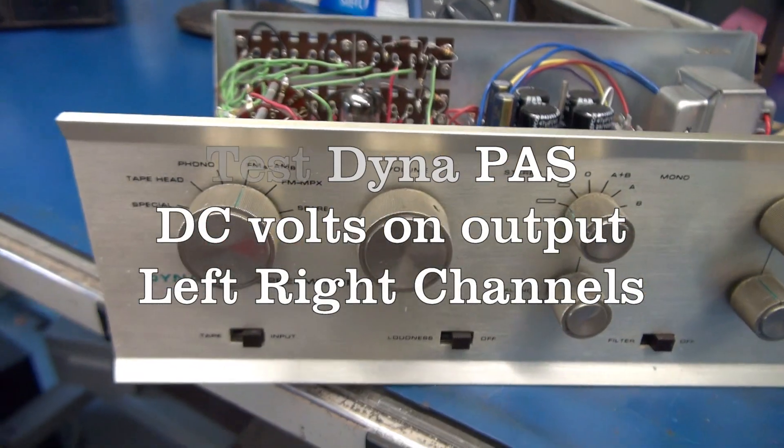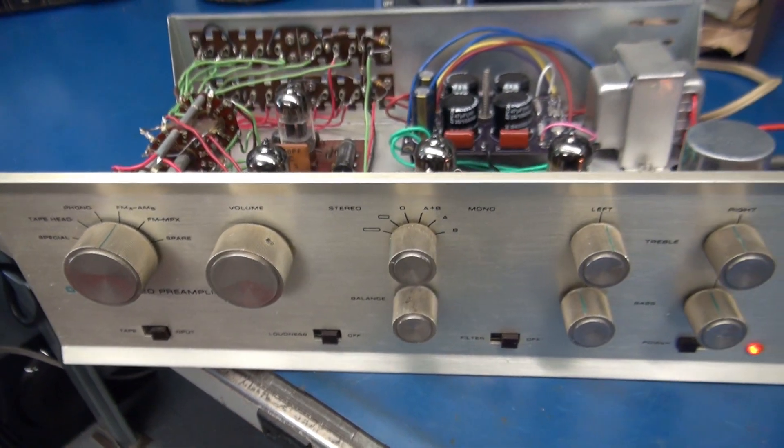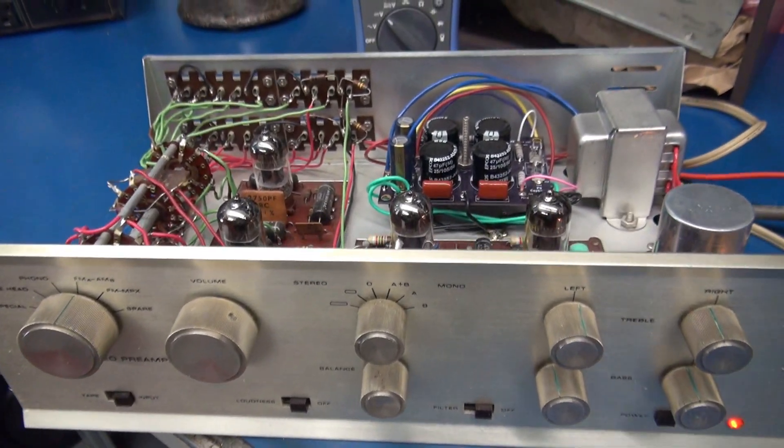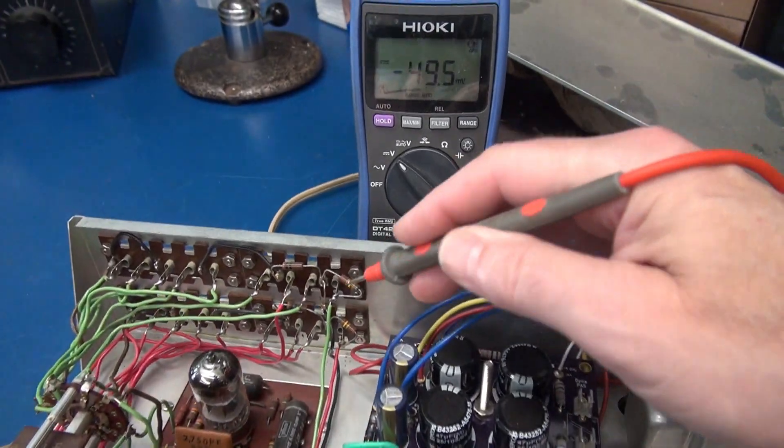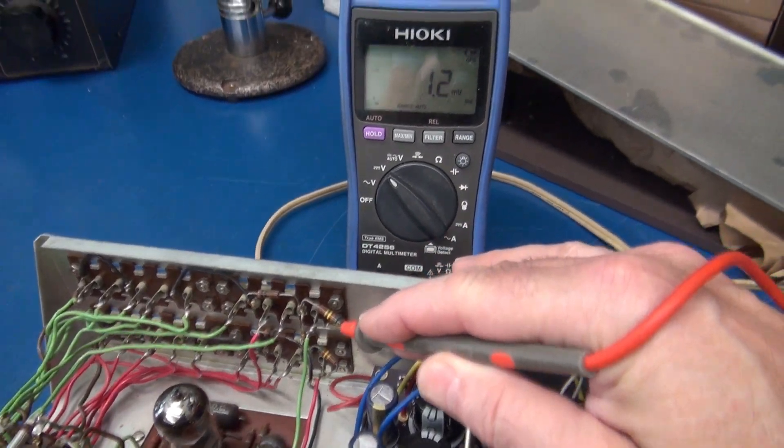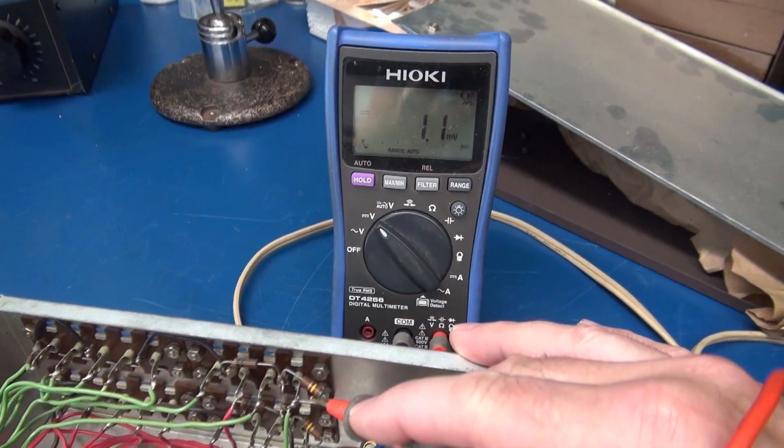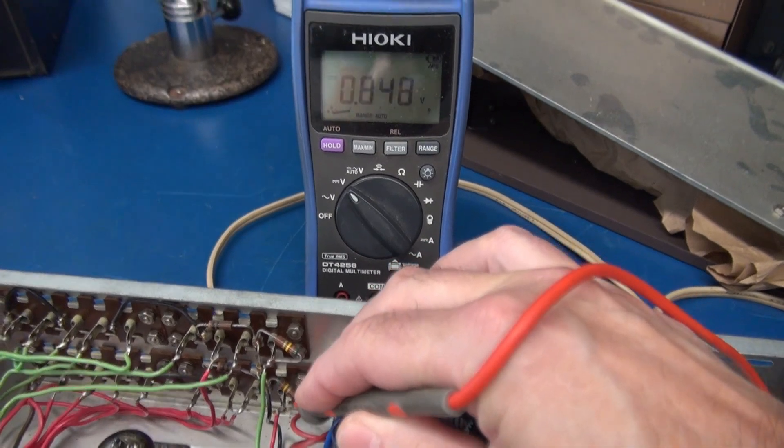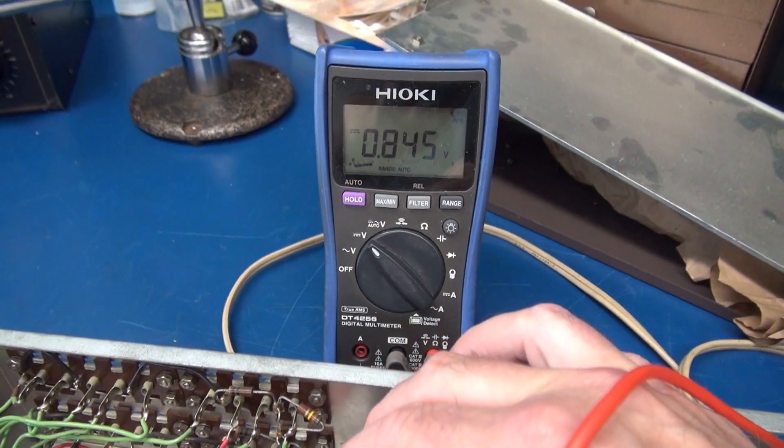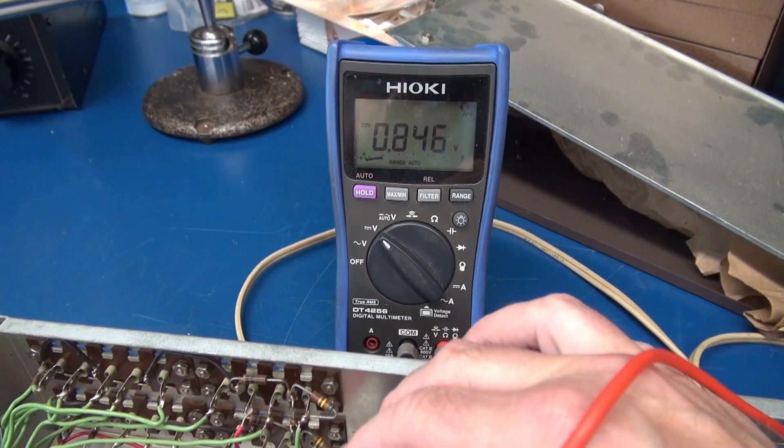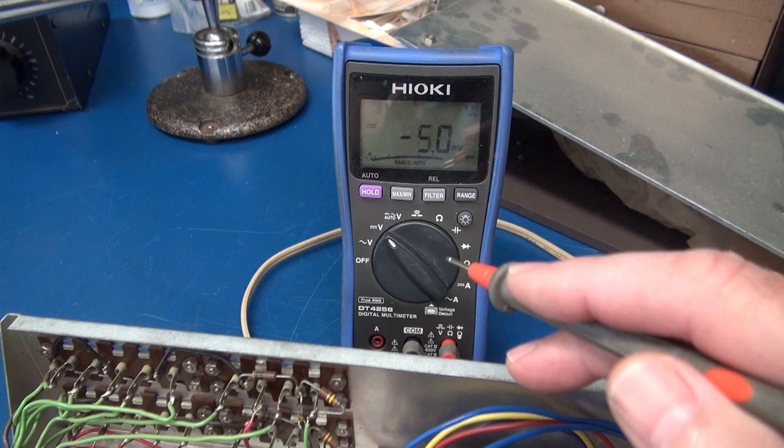If you have a Dyneco preamp and you're experiencing hum or distortion on the outputs, the first thing you want to check is the output jacks for DC voltage. There's the left, and there is the right. You see that 0.8 volts DC? That's going right into your amplifier.